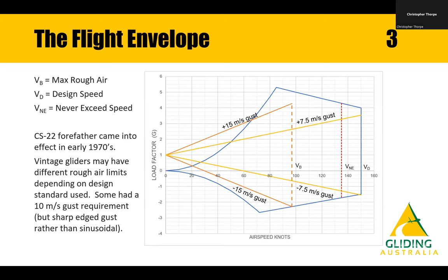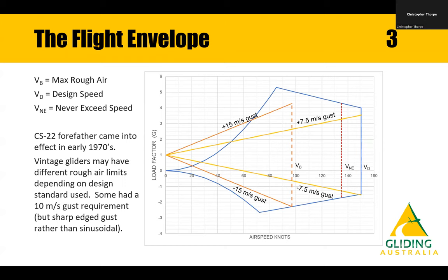7.5 metres per second is a 15-knot gust. This makes the assumption that the sailplane is in smooth air and then suddenly encounters a rapid change in angle of attack by hitting a gust. You can get the equivalent by flying in strong sink at about 7.5 knots down and then running into strong lift at about 7.5 knots up — that's the equivalent of hitting a 15-knot gust. It's the delta between state A and state B, so you can very easily end up in this kind of territory at VNE on a good summer's day.